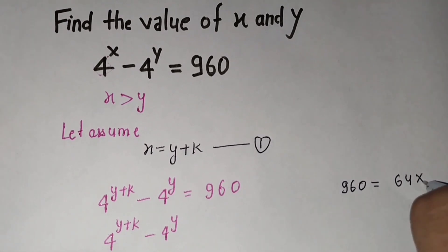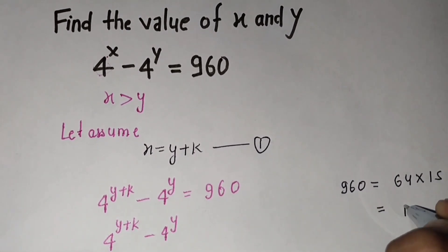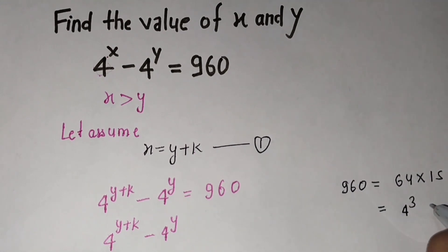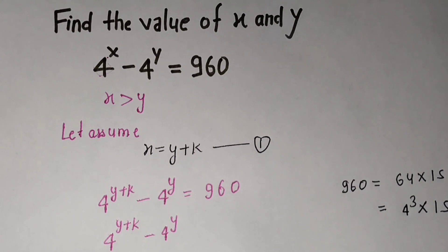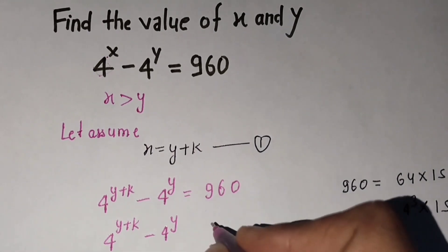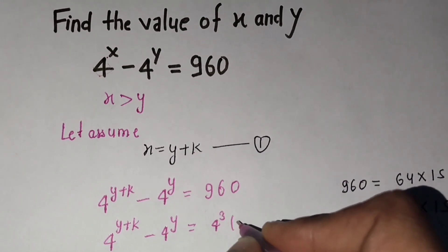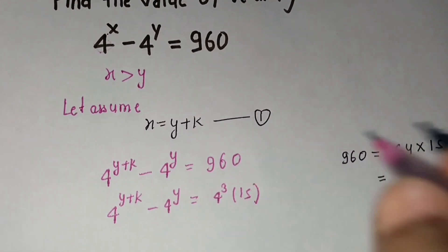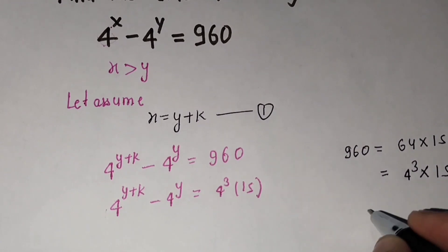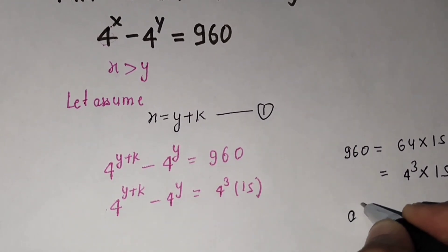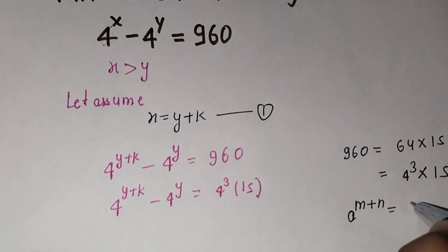So 4 raised to power (y plus k) minus 4 raised to power y equals 960. I can write 960 as 64 times 15, and 64 I can write as 4 raised to power 3. So 960 equals 4 raised to power 3 times 15. I can replace this term with 4 raised to power 3 times 15.